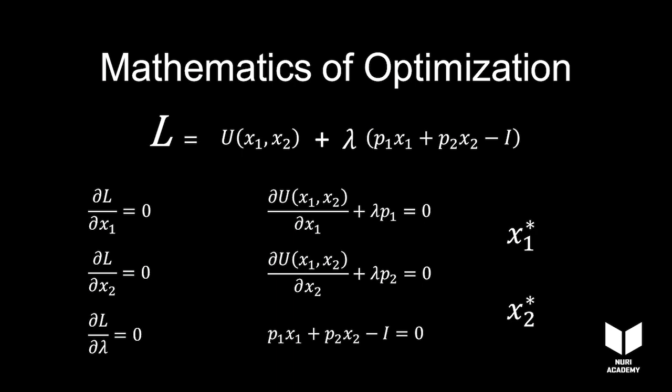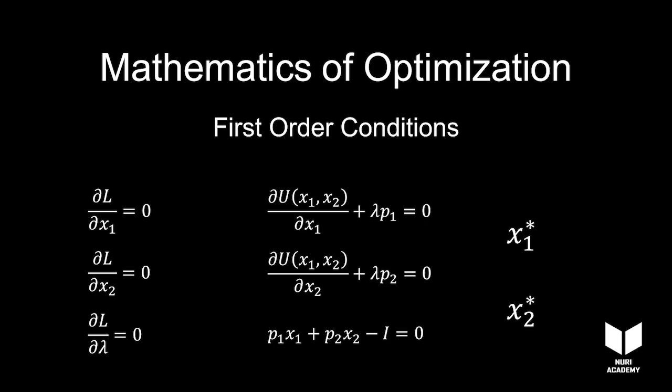The fact that at the optimum, the first derivatives of the Lagrangian are zero is known as the first-order conditions.